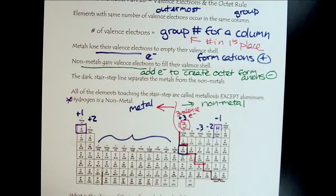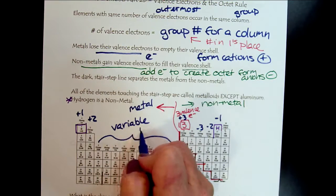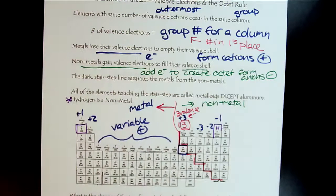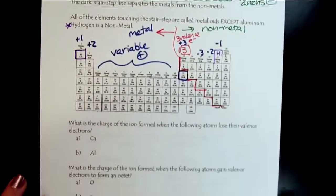In the middle here, here's those tricky transition metals. They have variable positive charge. We can see that ion formation is driven by the number of valence electrons. Let's make sure that everybody feels confident with this. Let's work a few practice problems.